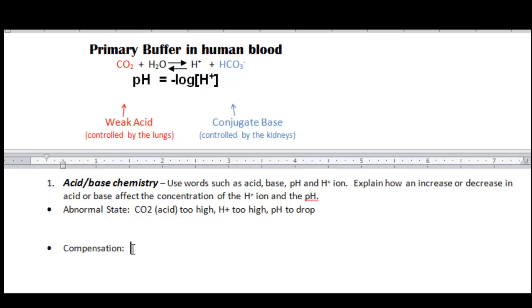And for the compensation, using the summary, we determine that the bicarb, the HCO3-, which is the base, identified as the base, needs to increase to offset the increase in the acid. And that will make the H+ drop, therefore pH to increase back to where it should be.